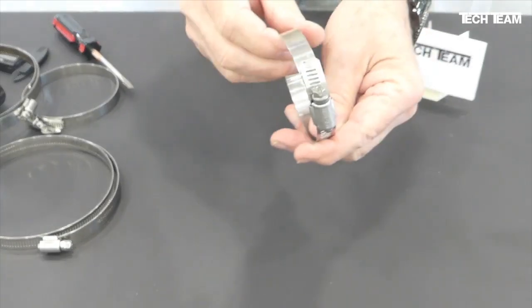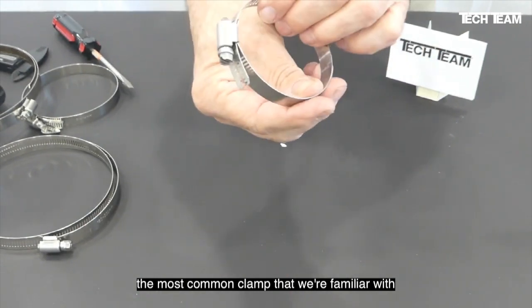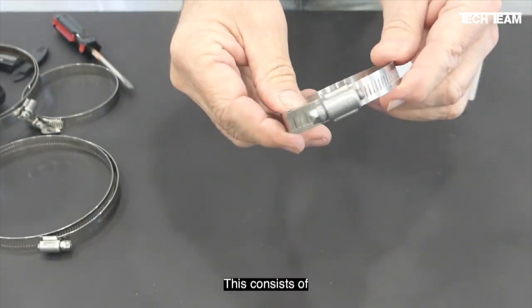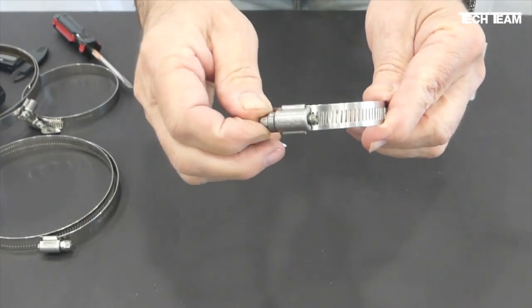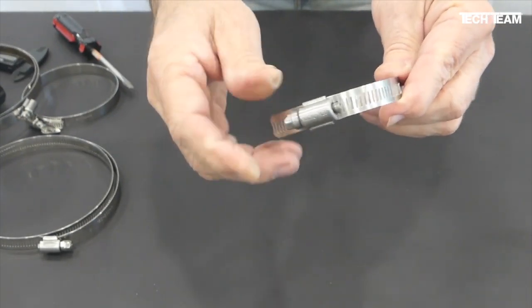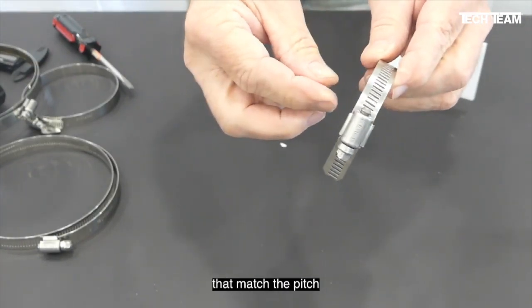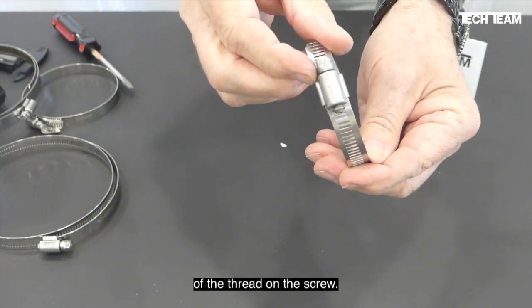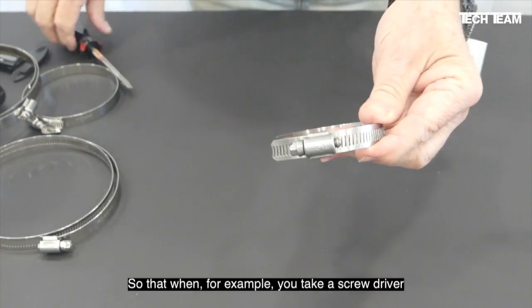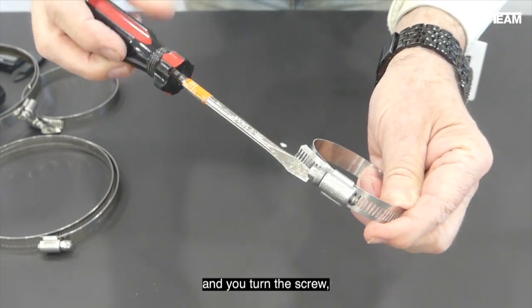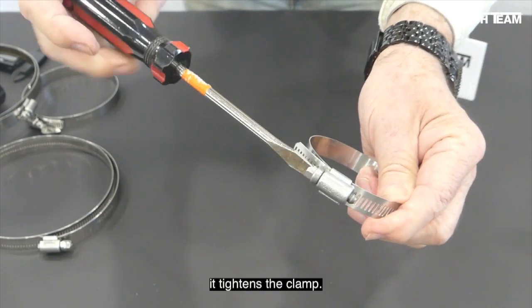When it comes to clamps, the most common clamp that we're familiar with is what's known as a gear clamp. This consists of a screw mechanism and a band with helical slots that match the pitch of the thread on the screw, so that when, for example, you take a screwdriver and you turn the screw, it tightens the clamp.